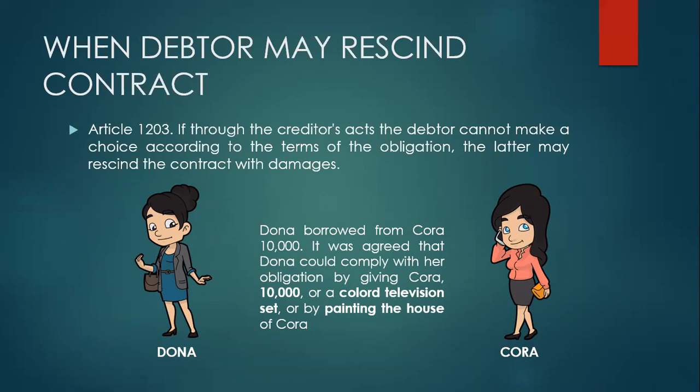So in case of rescission, the amount of 10,000 must be returned by Donna with interest, and Cora in turn must pay the value of the colored television set plus damages. Rescission means that the parties should return what they have received in the obligation. However, the debtor is not bound to rescind. Since only the colored television set was lost, Donna may still choose between 10,000 pesos or painting the house of Cora if she doesn't opt to rescind the contract.